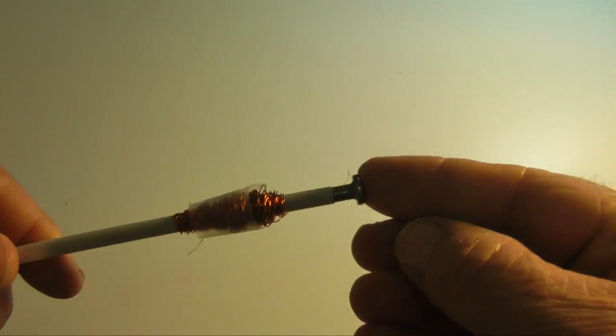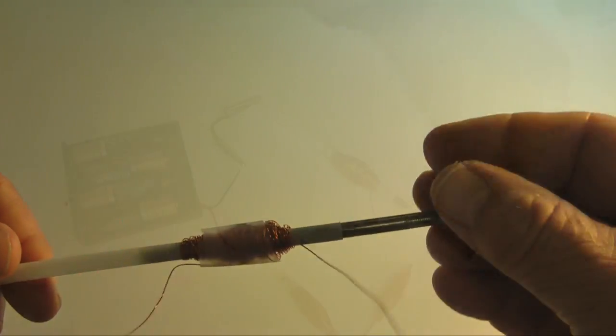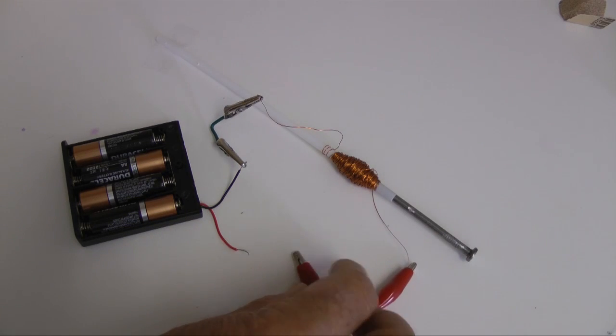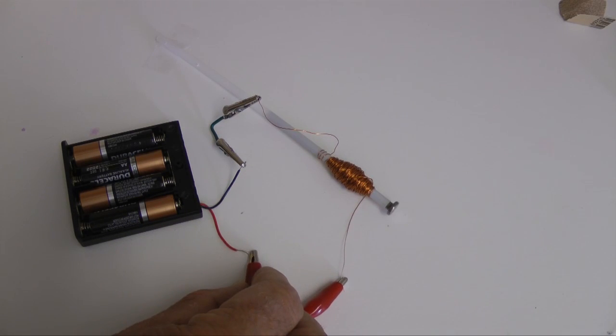This 4-inch iron nail fits perfectly into the coil end of the straw. Connecting the two leads to a battery, we witness the magnetic field moving the iron nail.